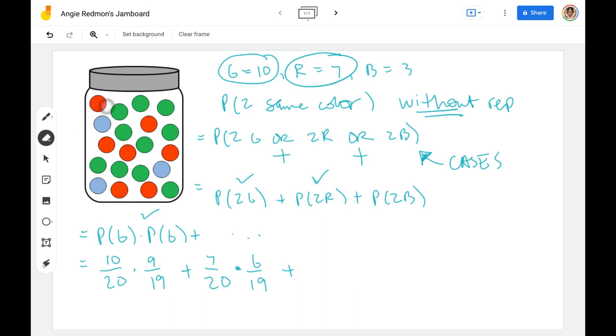So I'm going to go back to the full jar. So for my blues, there are three to start with three out of the 20 times. I keep wanting to write a plus times two out of the 22 out of the 19. Sorry, two out of the 19.